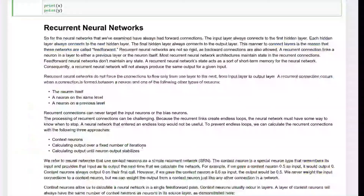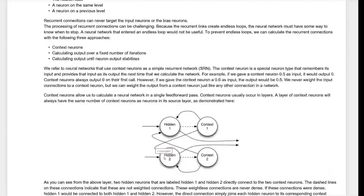We are looking at recurrent neural networks. There are a lot of different types of these. We'll start by looking at one of the most classic types, mainly because it's relatively easy to understand. And then we'll look at the more modern ones, the LSTMs and the GRUs.